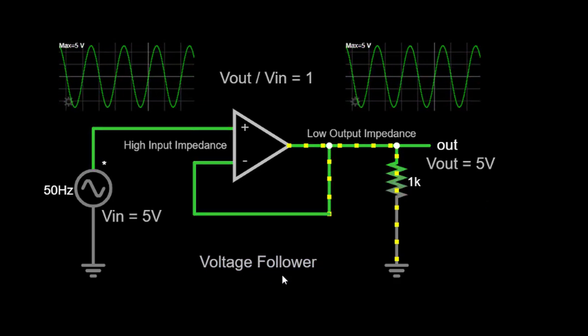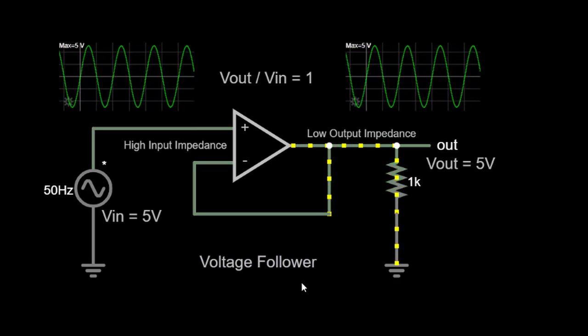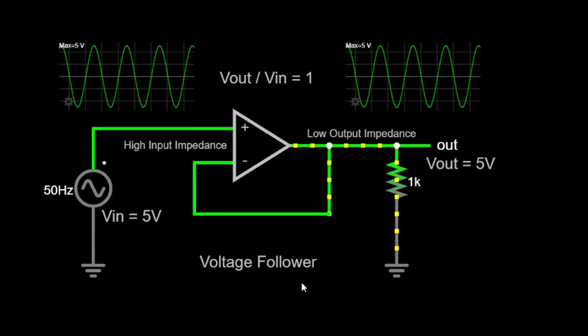A voltage follower, also known as a unity gain amplifier or buffer amplifier, is a simple circuit that has various applications in electronics.